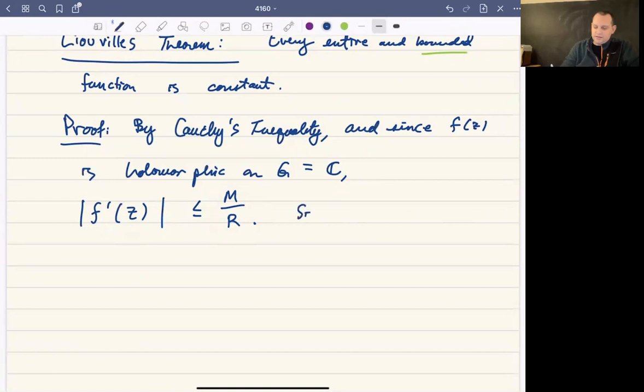So since the left-hand side is independent of R, then by taking R to be larger and larger and larger, this forces the left-hand side to be zero.